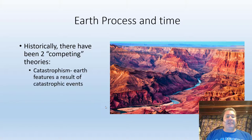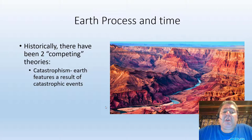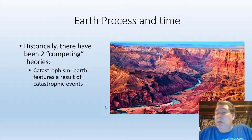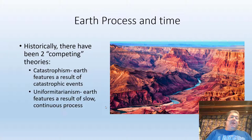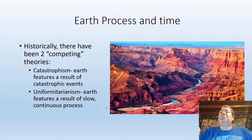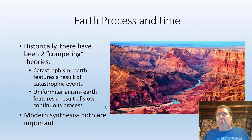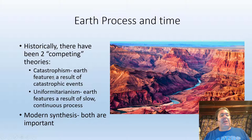Relating all this back to Earth processes and time: historically there have been two competing theories of how our current landforms developed. Catastrophism holds that Earth's features result from catastrophic events — large meteorite impacts, floods, volcanic eruptions. Uniformitarianism says that the slow processes we see today — meandering rivers, deposition, erosion — are what shape our landforms. Our modern synthesis says both are important: it takes both catastrophic and normal gradual processes to define our planet. All right, have a good day folks.